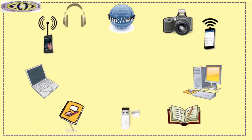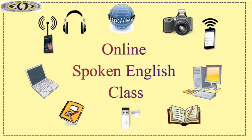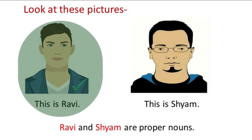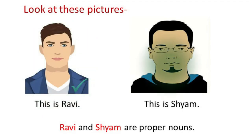Hello everyone and welcome to online spoken English class. Look at these pictures. This is Ravi and this is Shyam. Can we call Ravi as Shyam and Shyam as Ravi? Of course not. But why? Because when I call Ravi, only Ravi will respond as that is his name and it is particular to him.